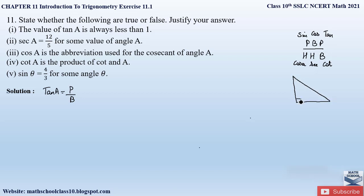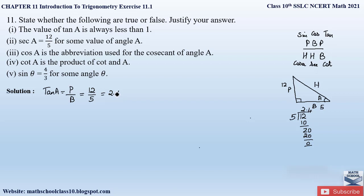Since tan A is perpendicular by base, let us first draw a right angle triangle. Assume this angle to be angle A — the acute angle. The side opposite this acute angle is the perpendicular, the adjacent side is the base, and the side opposite the right angle is the hypotenuse. Now assume perpendicular = 12 and base = 5, so tan A = 12/5. Dividing 12 by 5 gives 2.4, which is greater than 1.